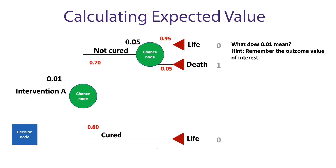So what does this .01 mean? Remember our outcome of interest is death. This tells us that 1%, or 1 out of 100 people, would die from this intervention. If we had used one for life instead, the expected value of intervention A would have been .99, meaning 99% of people would live. You can use either value as your outcome — whether they live or die — you just need to make sure you interpret them correctly.